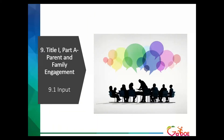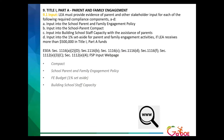Let's look at 9.1, which is the indicator that includes input. The law requires that each LEA must provide evidence that they are seeking stakeholder input for each of the four pieces in multiple ways — meaning more than one. You should be seeking input on your school parent and family engagement policy or plan, your school and parent compact, building school staff capacity, and that 1% set-aside. That 1% applies to LEAs that receive greater than $500,000; if you receive less than $500,000, seeking input on that is not a requirement.